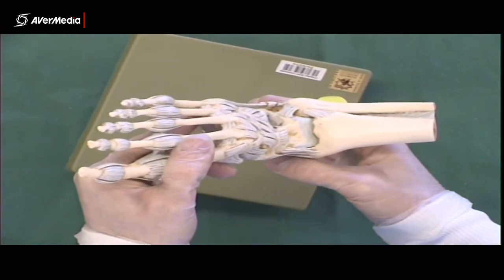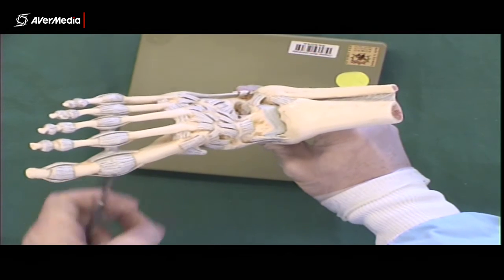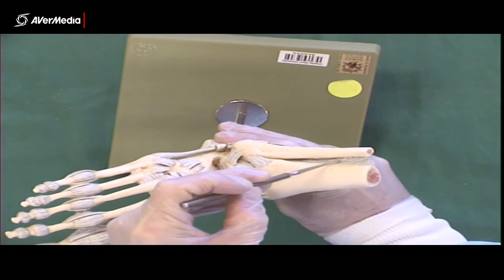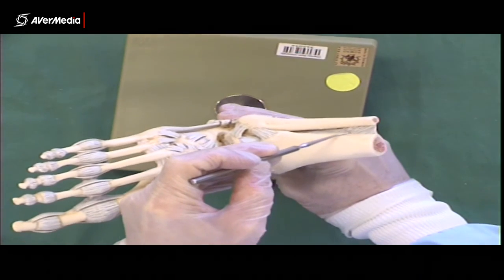And then the only other one, if we look at a foot here with ligaments in place, we can see in between the tibia and fibula part of the interosseous membrane there.